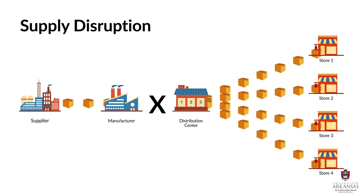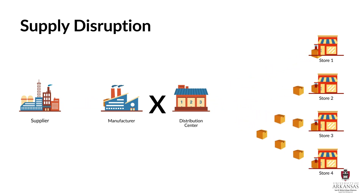Similar problems can exist with a manufacturer of finished goods. There may be times when production schedules get delayed and cause supply disruptions throughout the rest of the supply chain. It might be due to an equipment failure, missing materials, accidents, etc. All kinds of things can happen, but the end result is a supply disruption that disappoints customers.